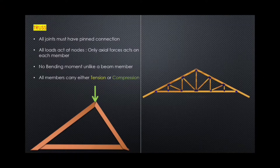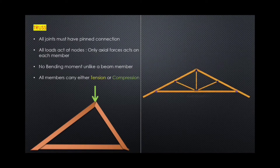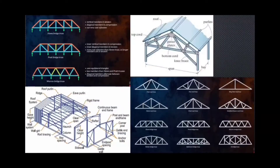Truss has basic shapes — we call them type shapes. If we change the arrangement of triangles, we change the truss form. This is the general introduction of the truss and its components and parts.